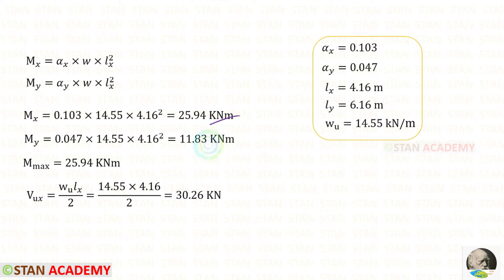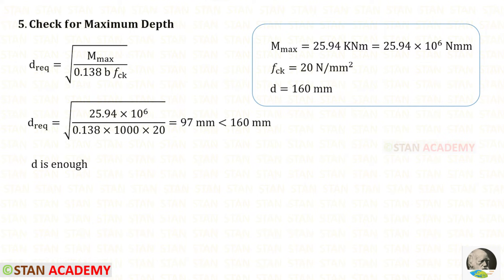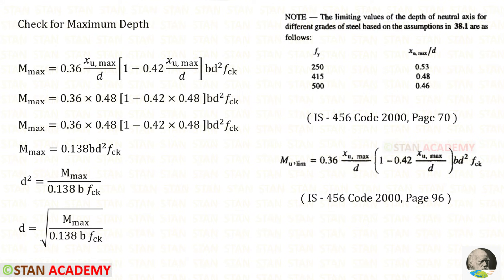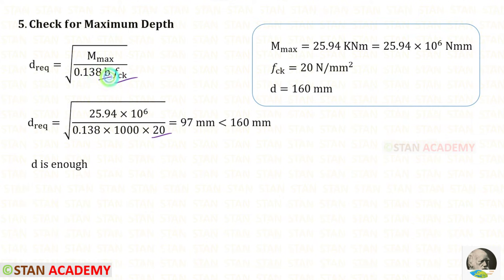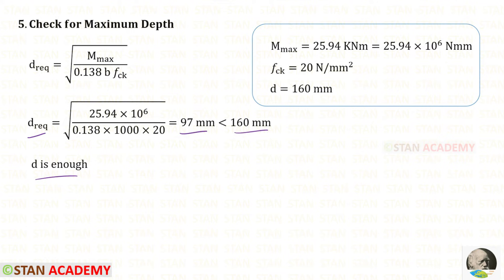Comparing MX and MY, MX is the maximum at 25.94 kN·m. We now apply the check for maximum depth. From codebook page 96, substituting xu_max/d = 0.48 with FCK = 20 and breadth = 1000 mm, the required depth works out to 97 mm, which is less than our effective depth of 160 mm. The effective depth is sufficient and the section is under-reinforced.